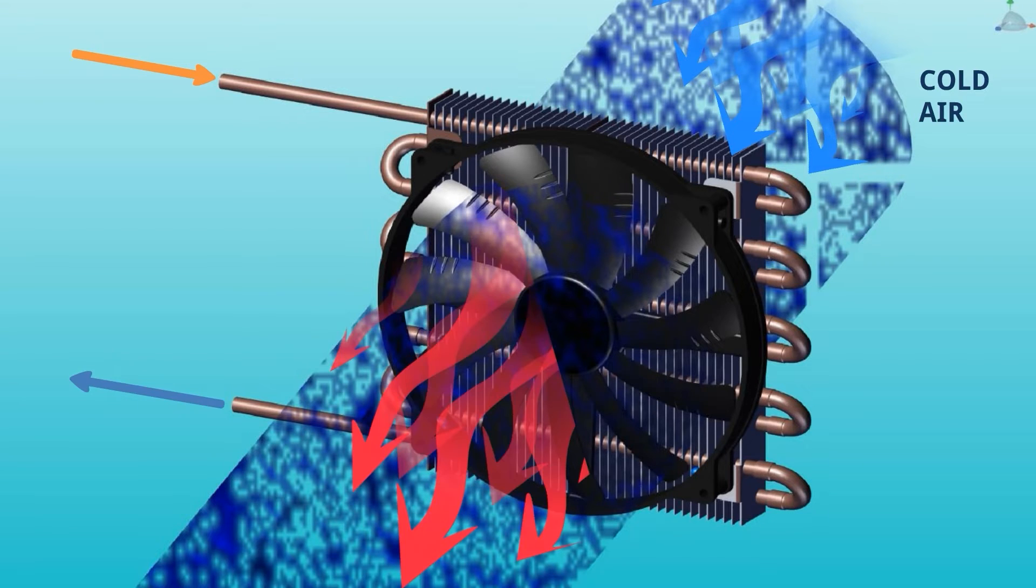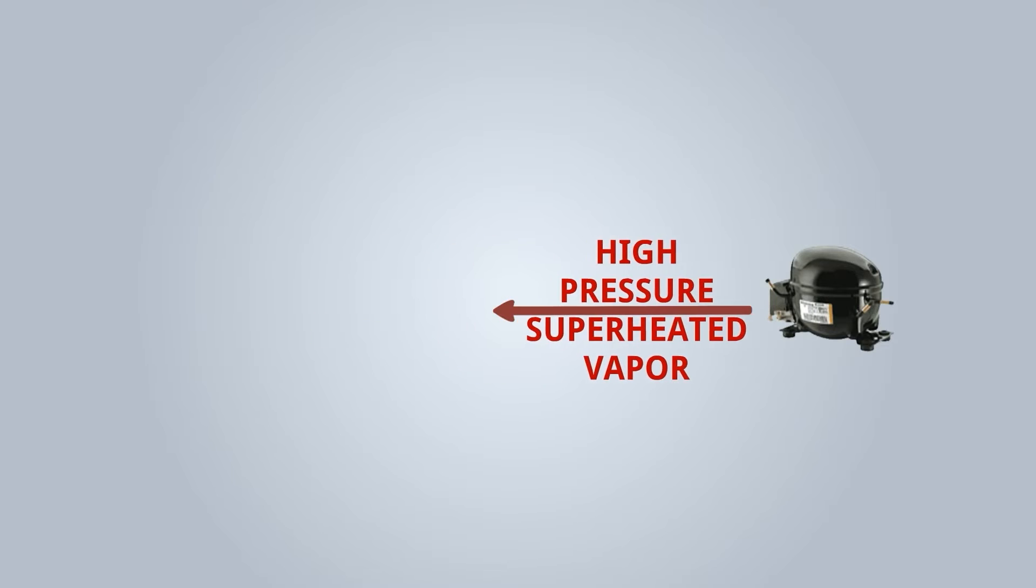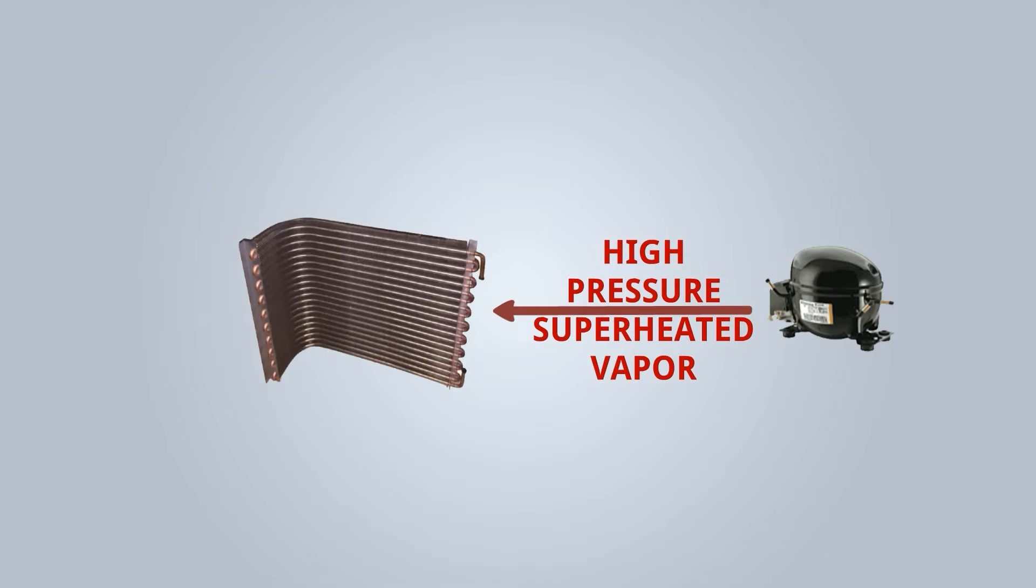Air becomes hot and refrigerant becomes cold. The compressor provides high pressure superheated vapor and it goes to the condenser, so we have to remove the heat. Let's see how it works.